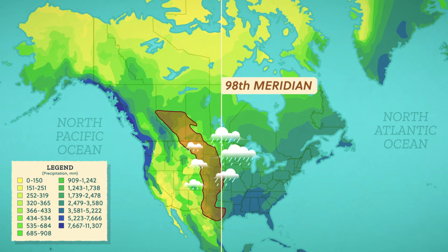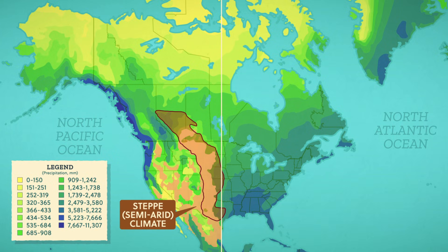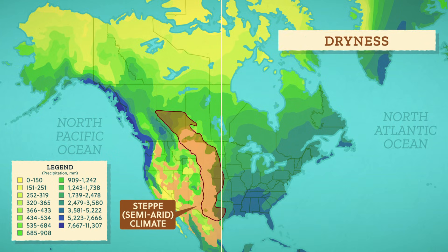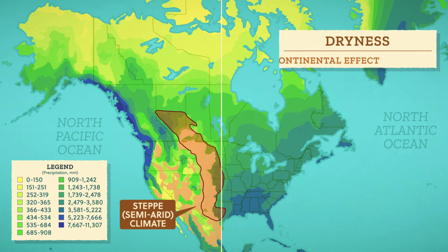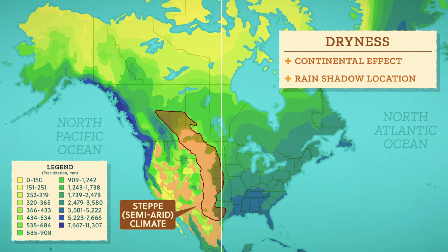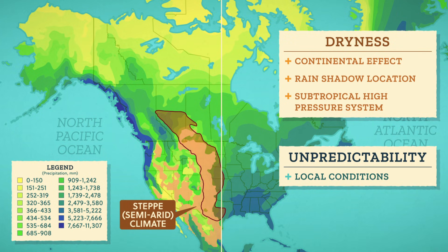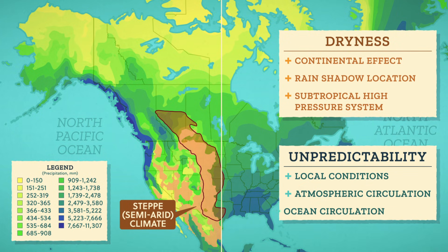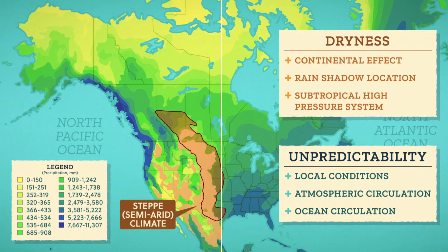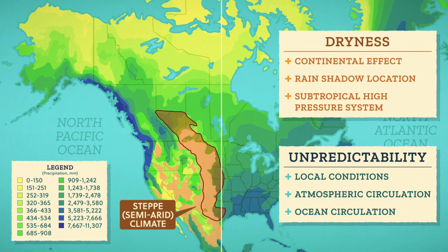The Great Plains straddle the 98th meridian, so there's precipitation sometimes — it's just unpredictable. The result is a steppe or semi-arid climate which is too dry to support forest, but too moist to be a desert. The dryness can be linked to some combination of the continental effect, the rain shadow location, and subtropical high pressure systems in the atmosphere. The unpredictability comes from local conditions and the constantly flowing atmospheric and ocean circulation, so rainfall amounts can change dramatically from one year or season or month to the next.